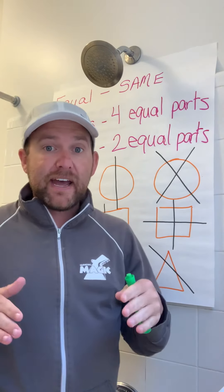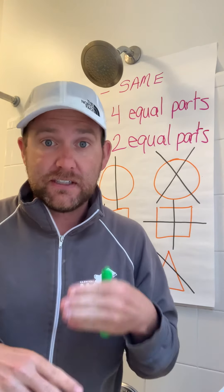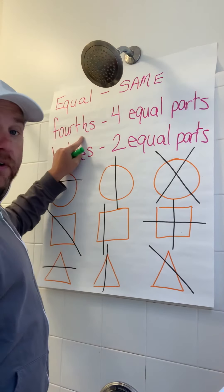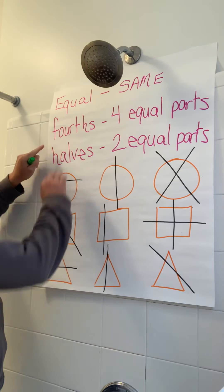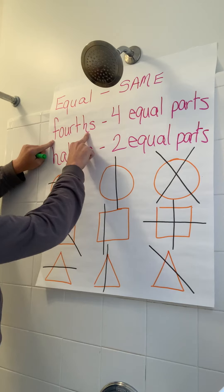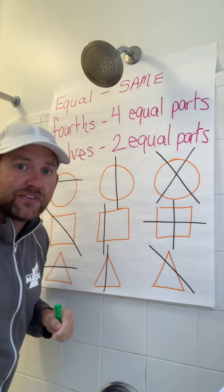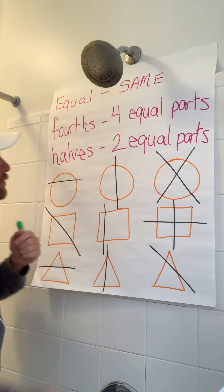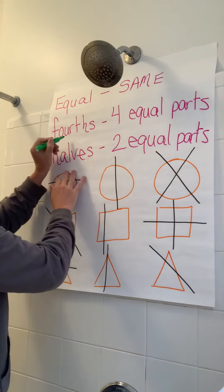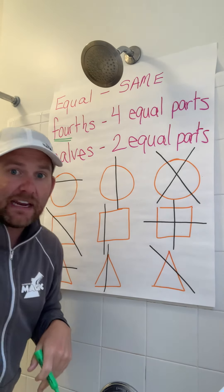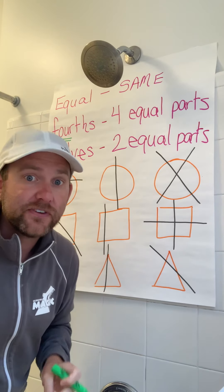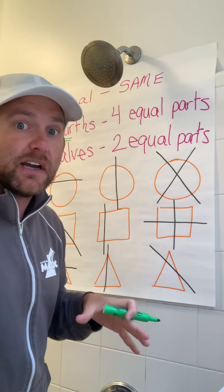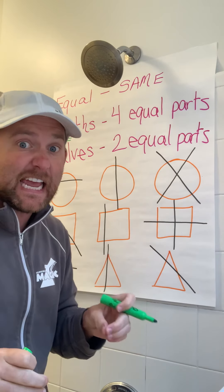Now, whenever we divide shapes into sections you might see the word fourths. Say fourths — notice the word 'for' right there, and the diagraph T-H at the end, so your tongue has to go out: fourths. If a shape is divided into fourths, that means there are four equal parts. This week we're talking about equal, meaning all parts are the same.